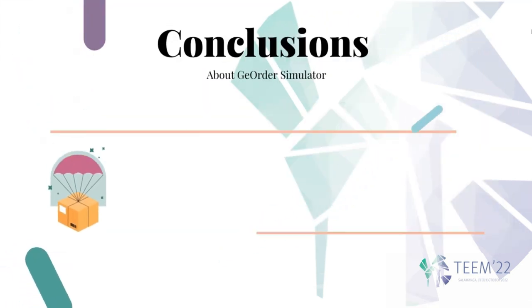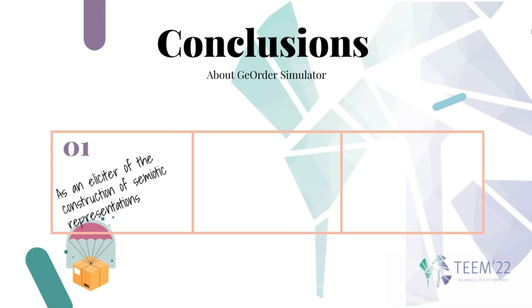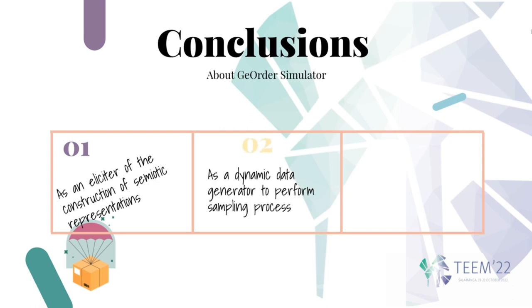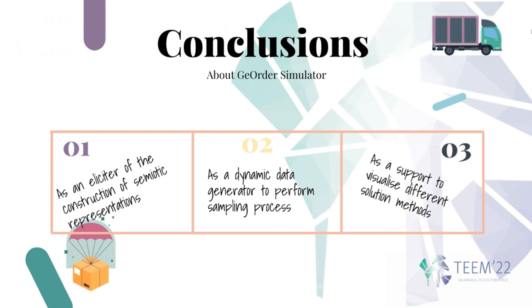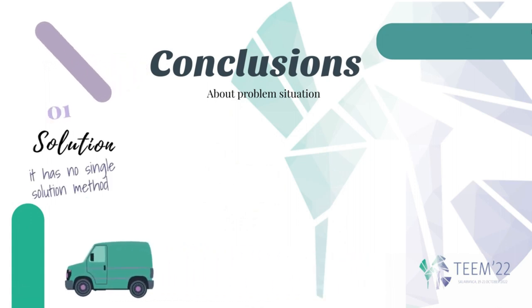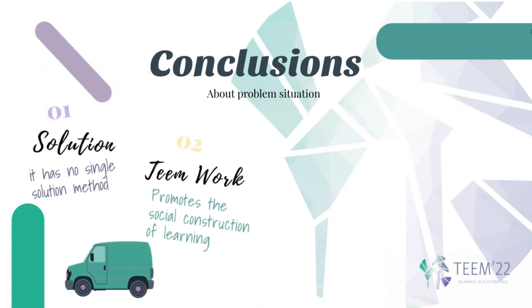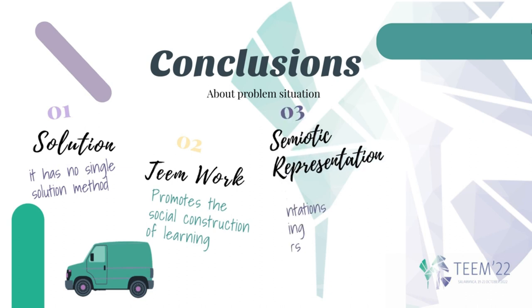The simulator was constructed so that the student could visualize, by coordinating between types of semiotic representation registers, the relationship between the concentration of points and the dispersion of the data calculated by the standard deviation. This simulator represents a new way of learning statistics, since involving the student with experimentation, sampling, and the process of data collection and organization is significant for their learning. The implementation promoted the social construction of knowledge, and during the evaluation process, metacognition was observed as an effect of transforming semiotic representation registers.